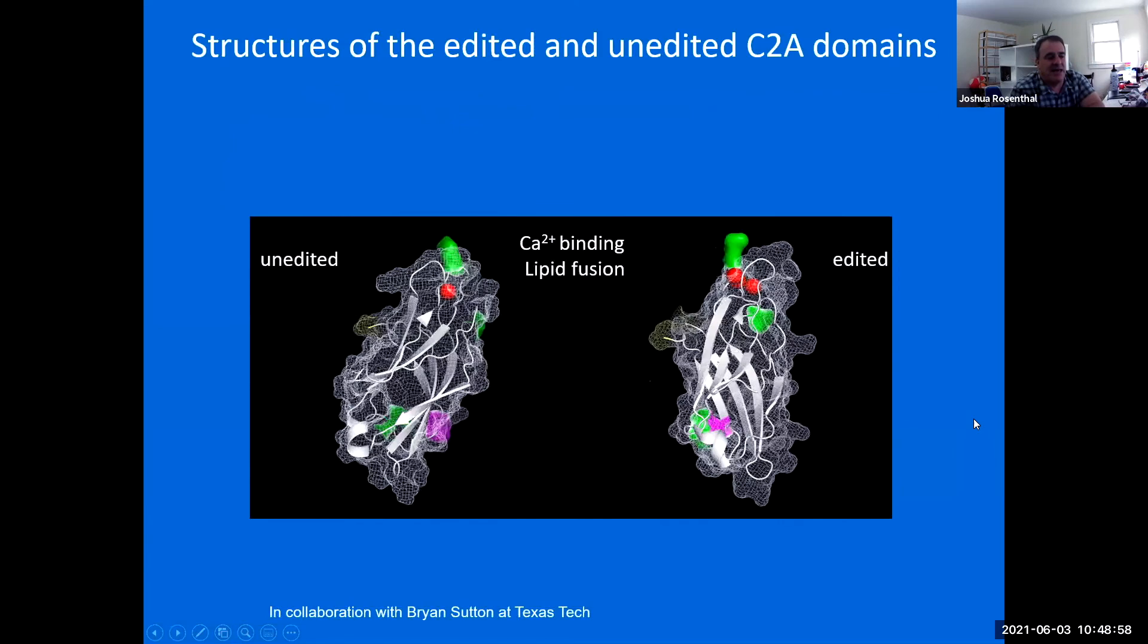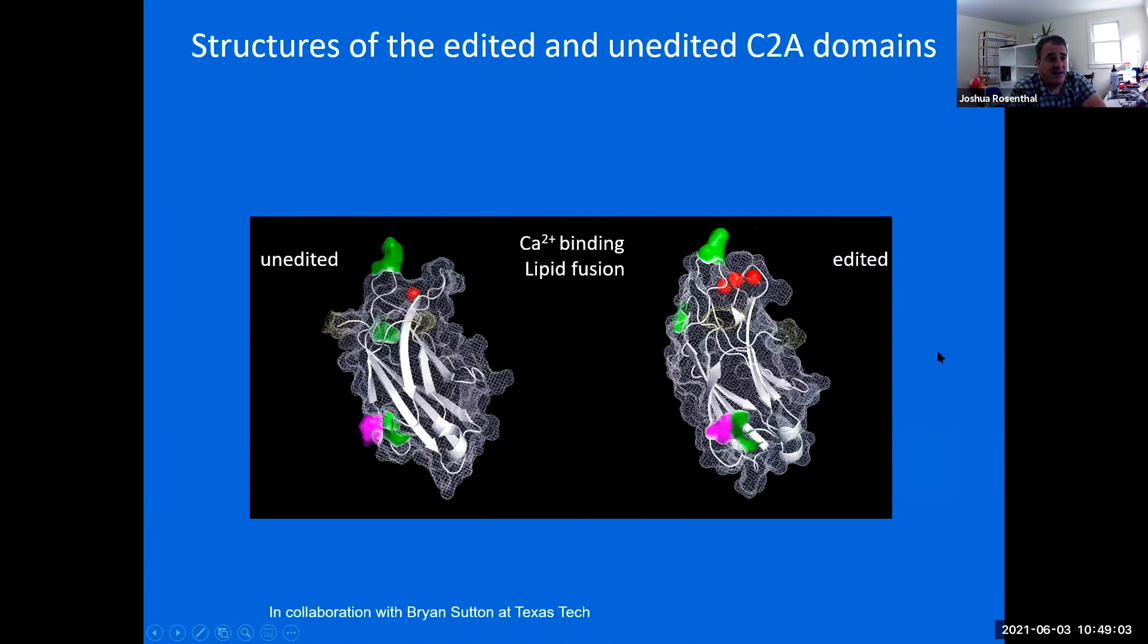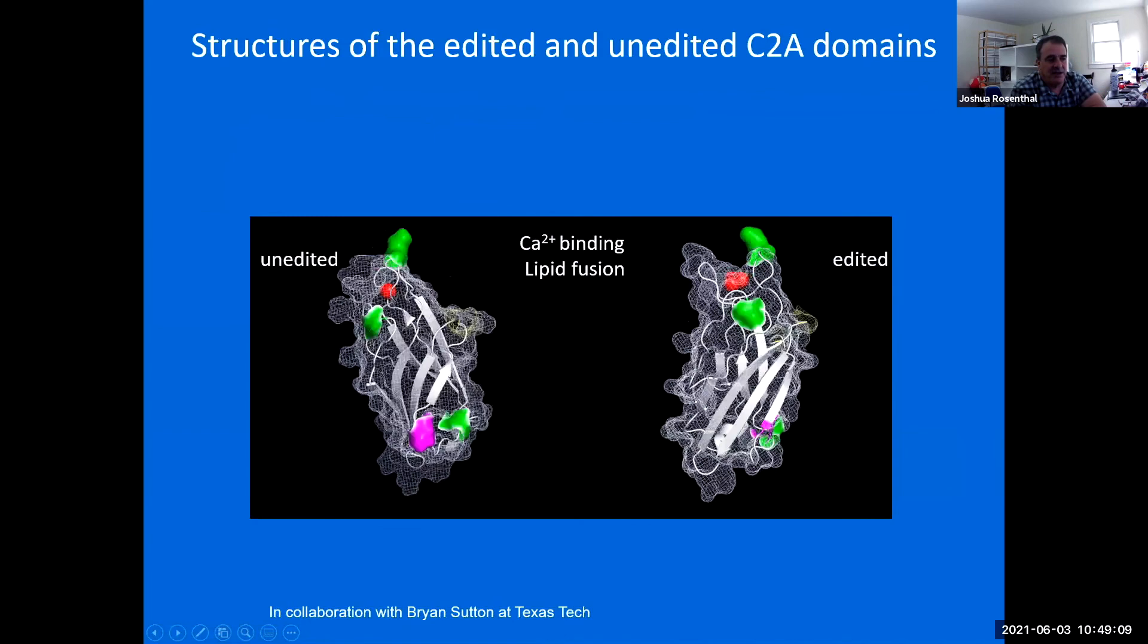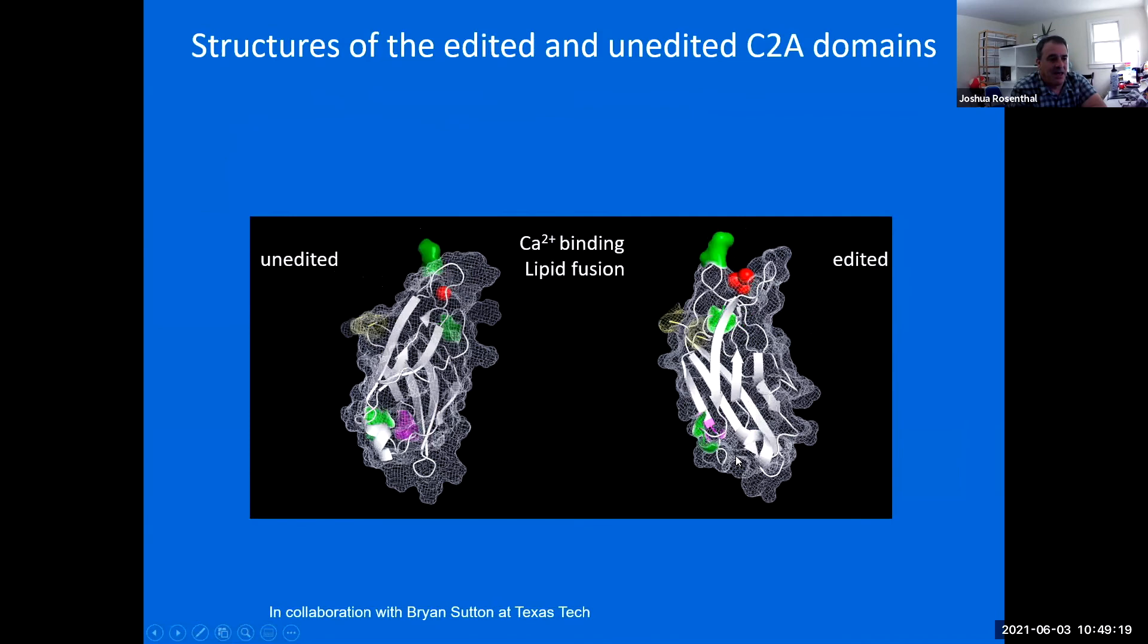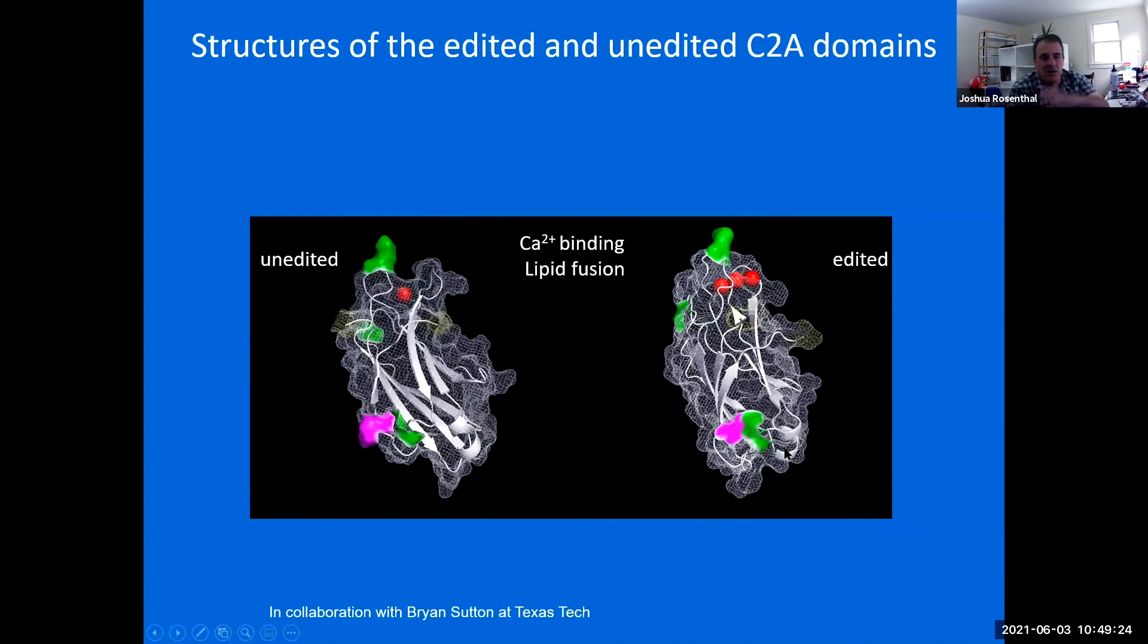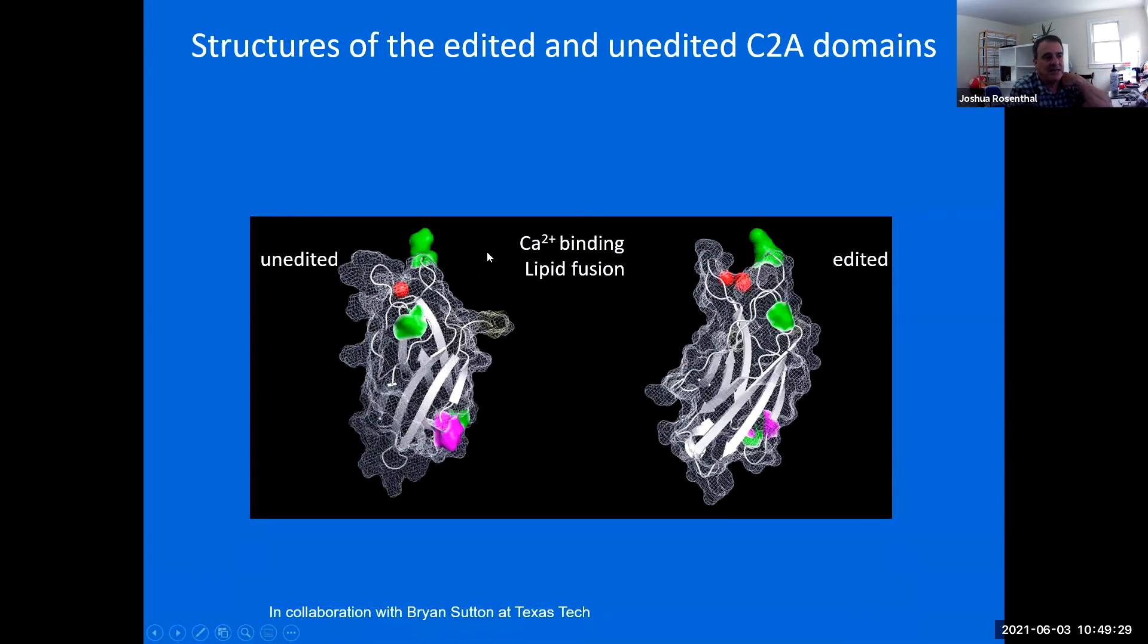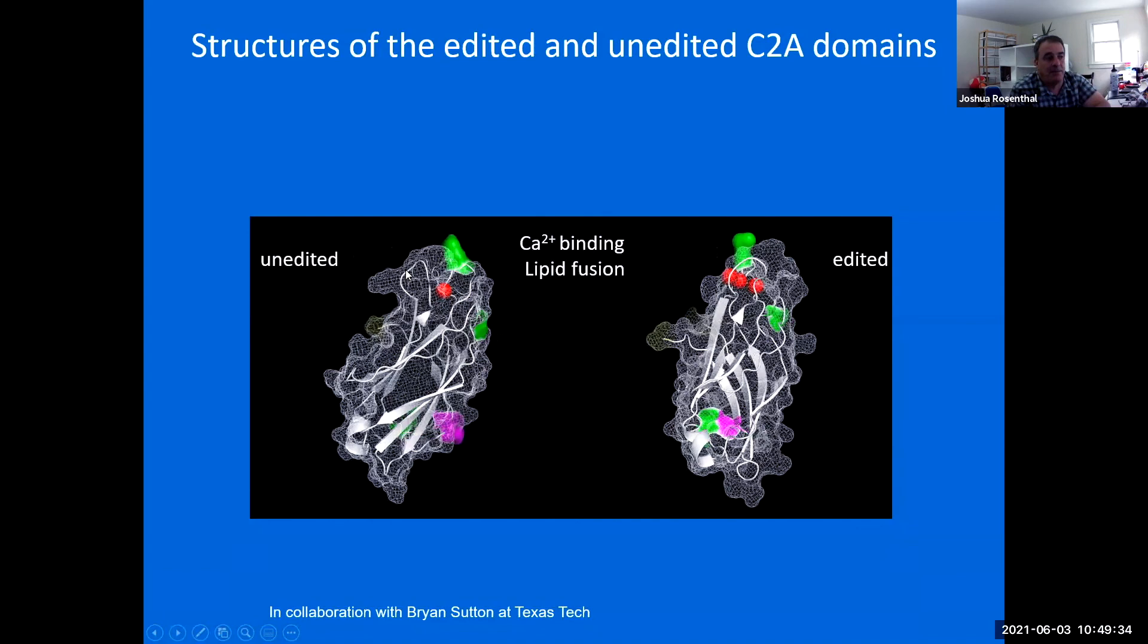Here in purple, you see the site of the isoleucine to valine change, and it makes a subtle change here in a beta sheet. You can see as it coming down, basically helping to extend a beta sheet in this area.